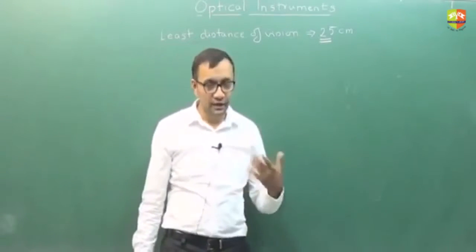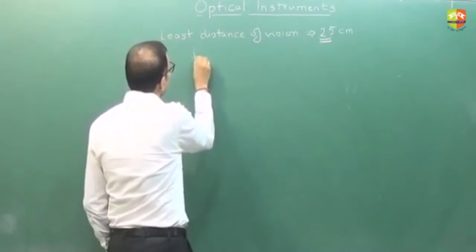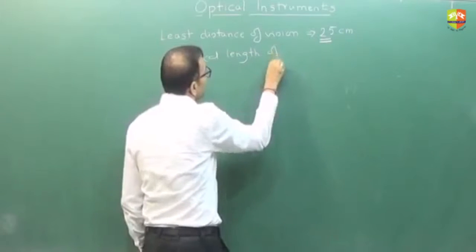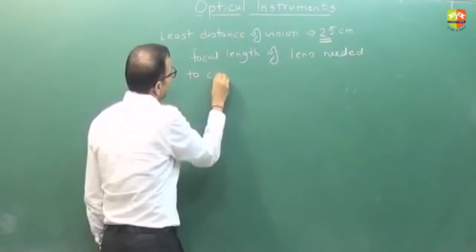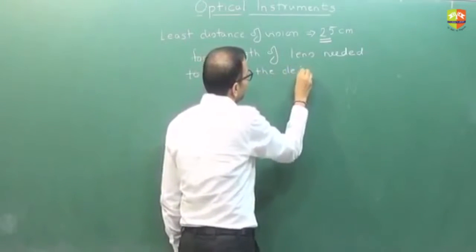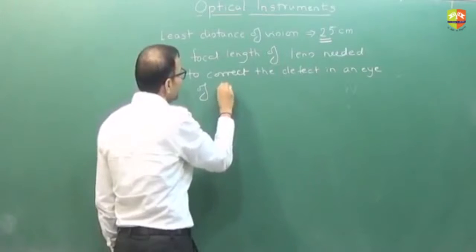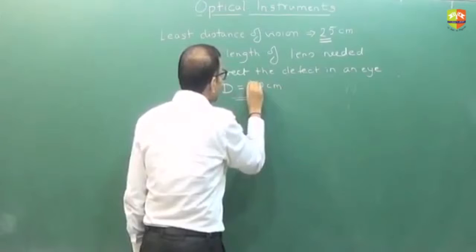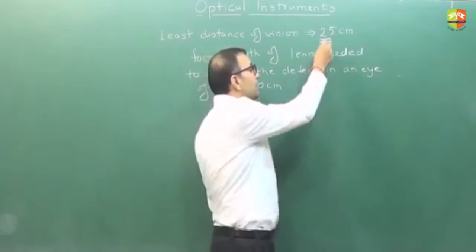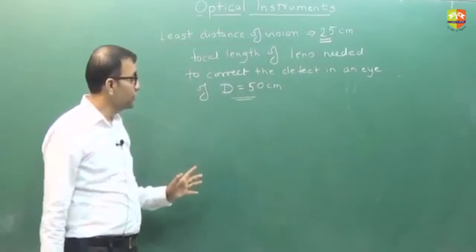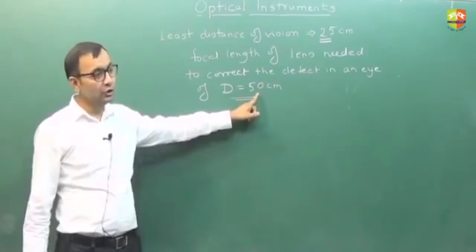Now let us see a numerical, then it will be more clear. You need to find out the focal length of the lens needed to correct the defect in an eye whose least distance of distinct vision is 50 centimeters. You want to make sure that this person, who is not able to see objects closer than 50 centimeters, can see an object that is at 25 centimeters.